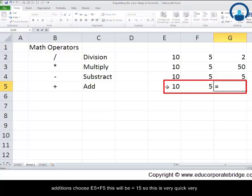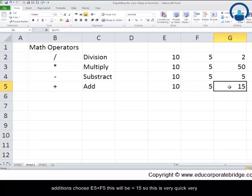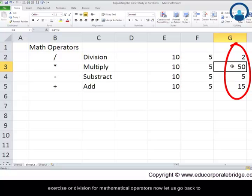Likewise perform the calculation for additions. Choose E5 plus F5. This will be equal to 15.